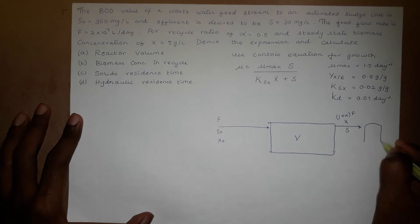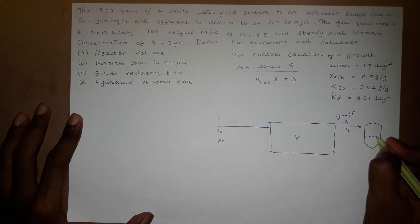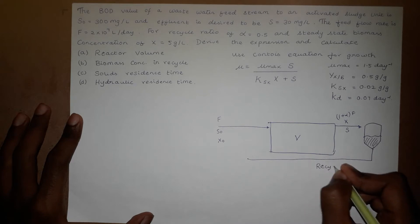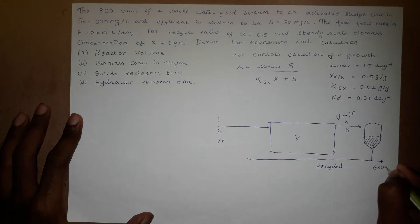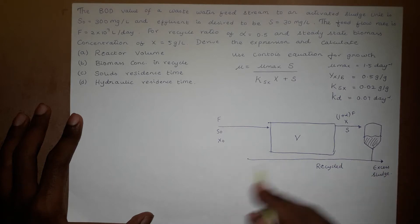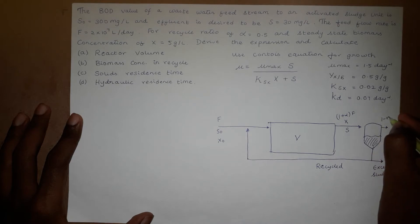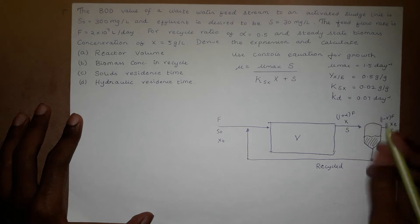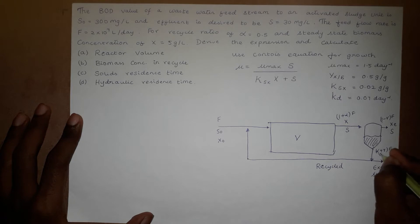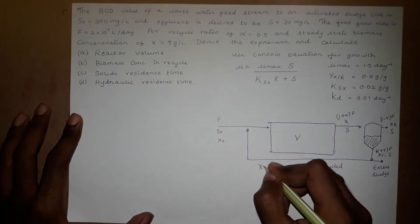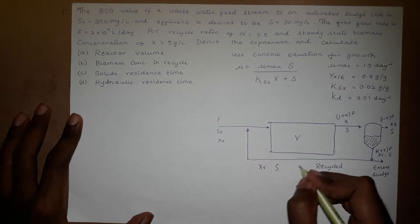The exit stream goes to a concentrator or settler, where cells are removed from the effluent, giving a clarified stream and a recycle stream. The clarified solution has flow rate (1/gamma)·F with Xeffluent and S. The combined settler outlet has flow rate (alpha + gamma)·F with XRecycle and substrate S. The recycle stream returns to the reactor with biomass concentration XR, substrate S, and flow rate alpha·F.